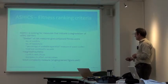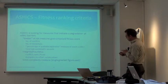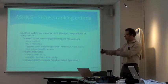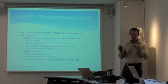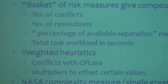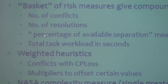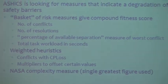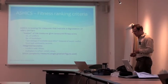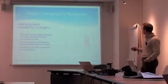In addition, we had weighted heuristics. We were interested in the amount of extra work created by the CP loss, so conflicts involving CP loss were ranked as more important than other conflicts. You have to weight certain conflicts for the search algorithm to target them, and there are multipliers to offset certain values — for example, percentage of available separation needs to be multiplied out to give it reasonable weighting within the compound fitness score. The final element was a NASA complexity measure, added late in the project when we added the thunderstorm.